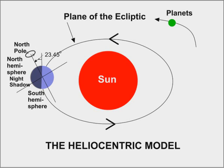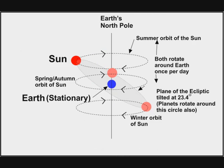How does the geocentrist explain the seasons? There is a perfectly rational explanation, but it is a little complicated to imagine. If we keep the Earth stationary and make it upright, then the plane of the ecliptic will be at twenty-three degrees to the equator.